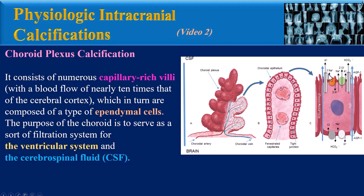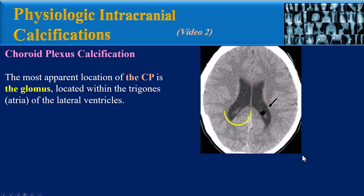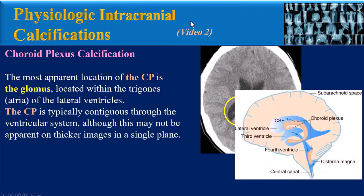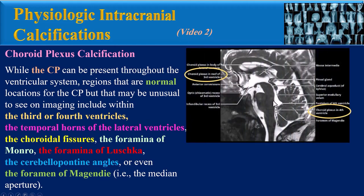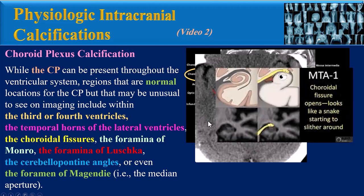For the ventricular system and cerebrospinal fluid, the most apparent location of the choroid plexus is the glomus, located within the trigones or atria of the lateral ventricles. The choroid plexus is typically contiguous throughout the ventricular system, though this may not be apparent on thicker images in a single plane. Normal locations that may be unusual to see on imaging include the third and fourth ventricles and the temporal horns of the lateral ventricles.